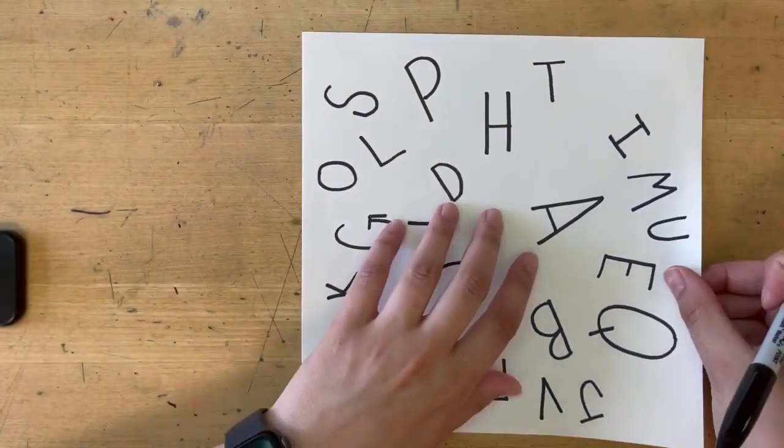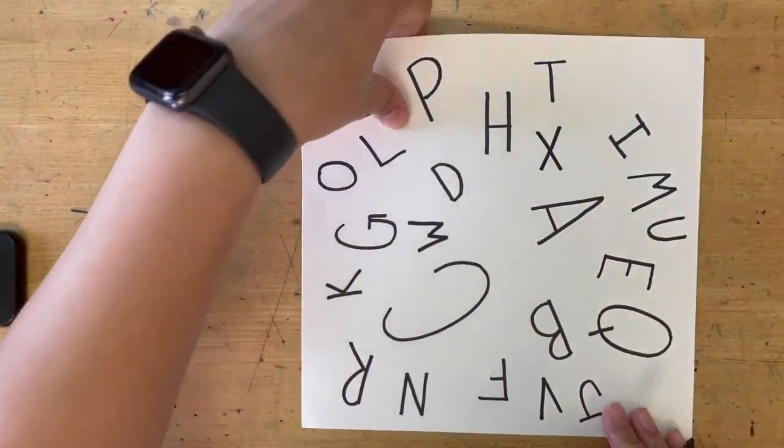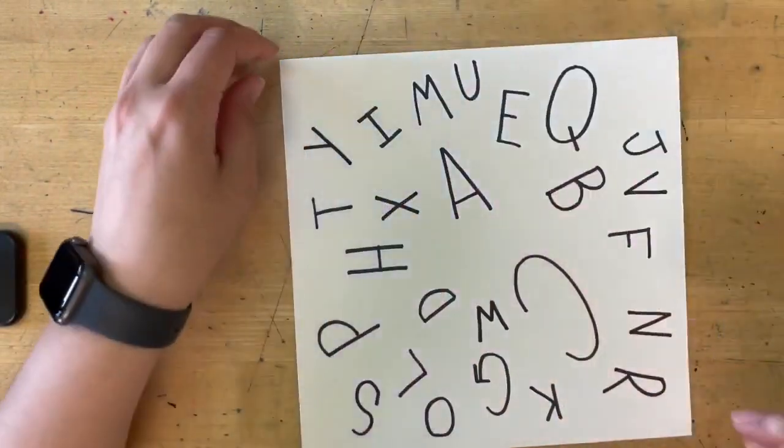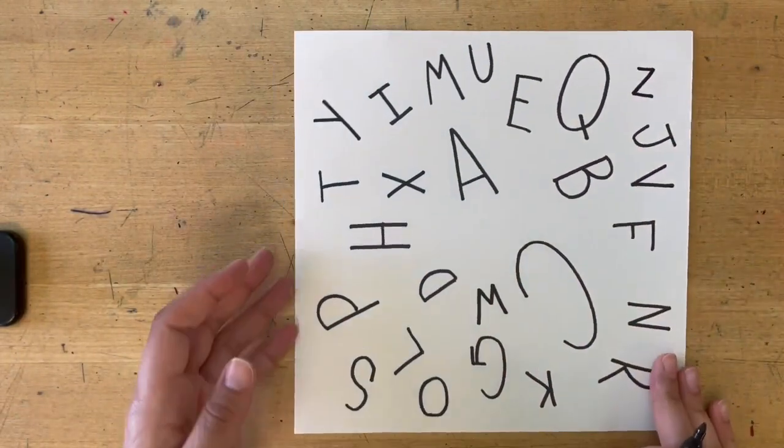As you run out of room, just put your letters where they fit. X, Y, and we'll do a bitty Z over here.